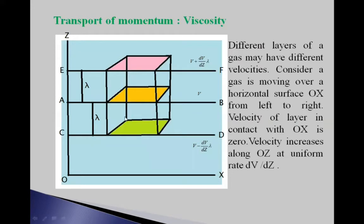If a gas is moving, then different layers of gas have different velocities. Such a gas is shown in this figure. The gas is moving from left to right along the OX horizontal surface. The gas layers are shown here — three layers are taken for study: the EF layer, the AB layer, and the CD layer.